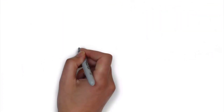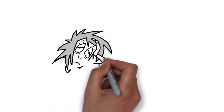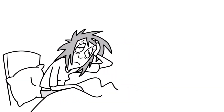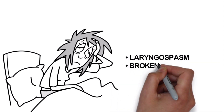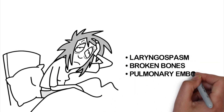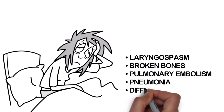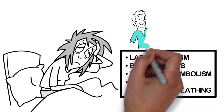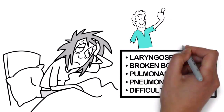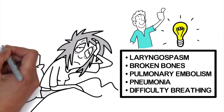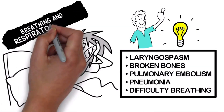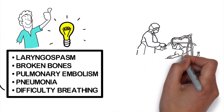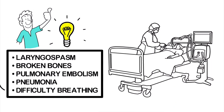Some serious health problems and complications can happen because of tetanus, including laryngospasm, broken bones, pulmonary embolism, pneumonia, and difficulty breathing. This is why it is important for respiratory therapists to be familiar with this condition, because it often results in breathing and respiratory issues. In some cases, it may even require intubation and mechanical ventilation.